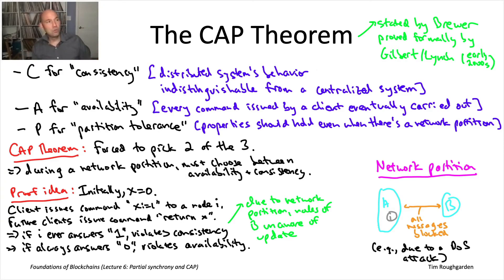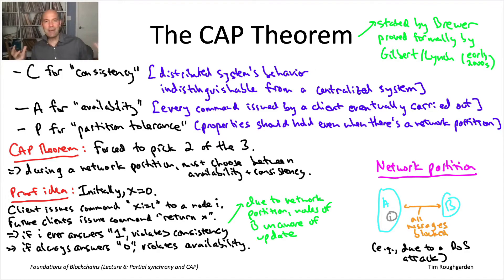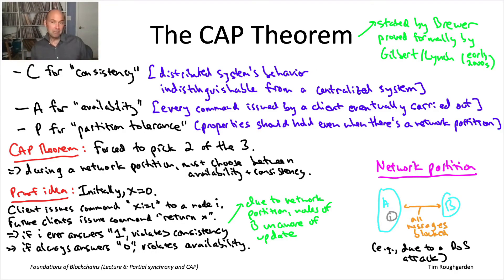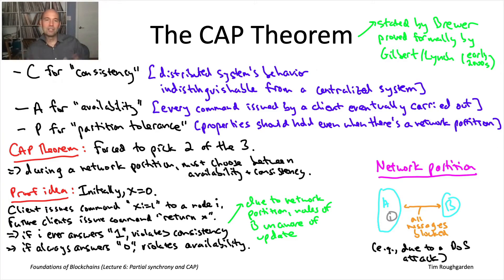NoSQL databases make the opposite choice — they want to always be available, at the cost that sometimes different parts of the distributed system will have slightly different views of the world. Something like Google would probably be much more interested in availability than consistency. If two people on different parts of the globe get slightly different search results because local copies aren't 100% in sync — no harm, no foul. But a bank would be much more interested in consistency, because having different branches show different account balances is the situation that must be avoided at all costs.